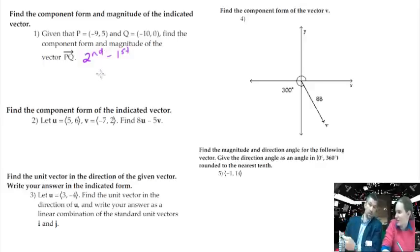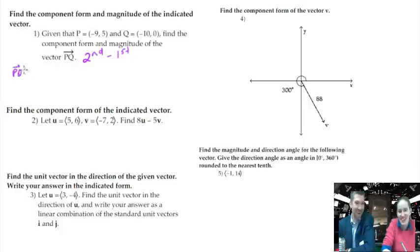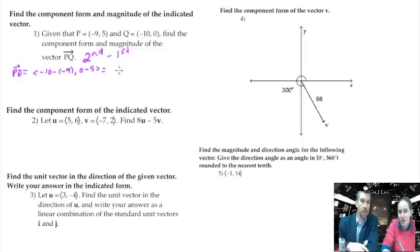Or in the book it said head minus tails. Head minus tails sounds good too. So we want to do, since it's P to Q, we want to do like negative ten minus a negative nine, which is going to actually be negative ten plus nine. Right. And then zero minus five. Right. That's going to give us component form. That's all there is to it. So that's ten plus nine. Negative ten plus nine is negative one. Zero minus five is negative five. That's component form.